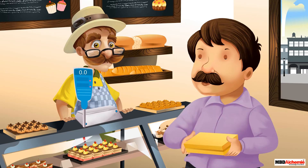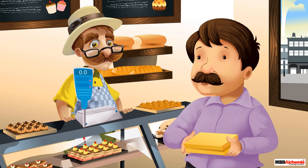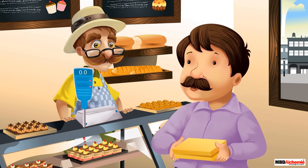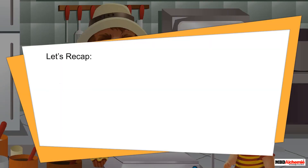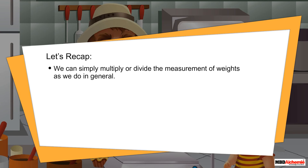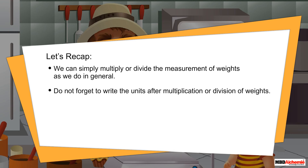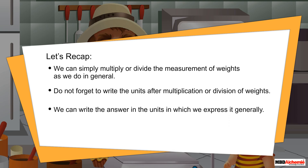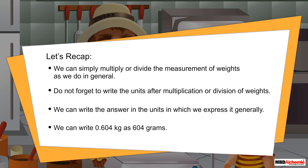The customer says thank you. Let's recap. We can simply multiply or divide the measurement of weights as we do in general. Do not forget to write the units after multiplication or division of weights. We can write the answer in the units in which we generally express it — for example, 0.604 kilograms can be written as 604 grams.